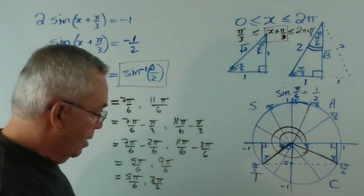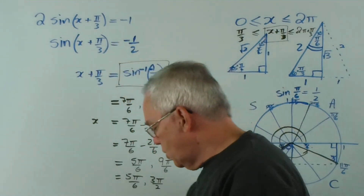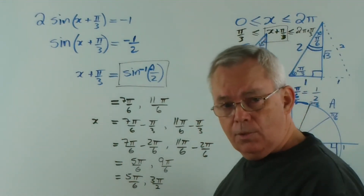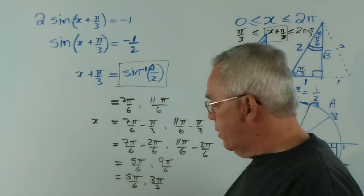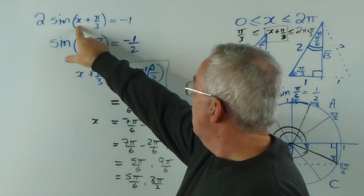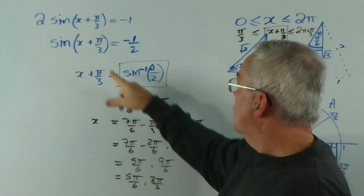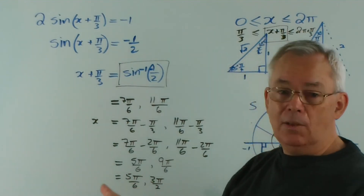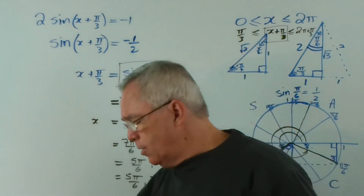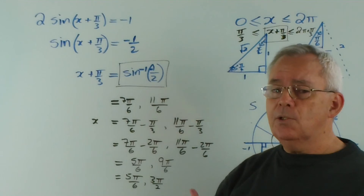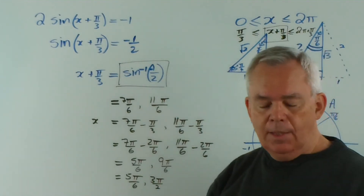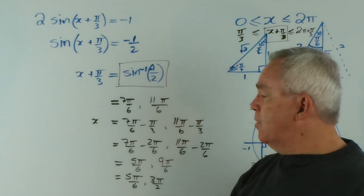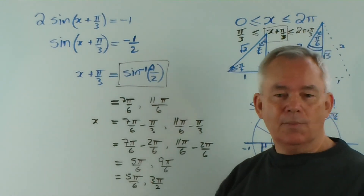Of course, before you move on, it's nice to substitute back and check. I'm aware the video's already long, so I'm not going to do it here, but I would suggest converting your calculator to radian mode and putting five pi on six in, checking that you get negative one, and doing the same with three pi on two. That way you can be confident you've got the right answer even without looking at the back of the book. That's certainly what I'd encourage you to do during a test if you have the time. If you can work quickly, you create time to check most, if not all, of your answers and be very confident you've got a hundred percent or something very close to it.